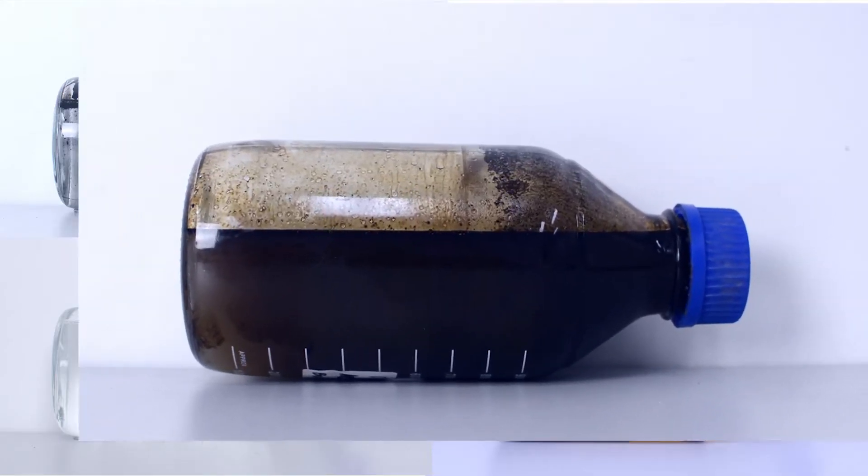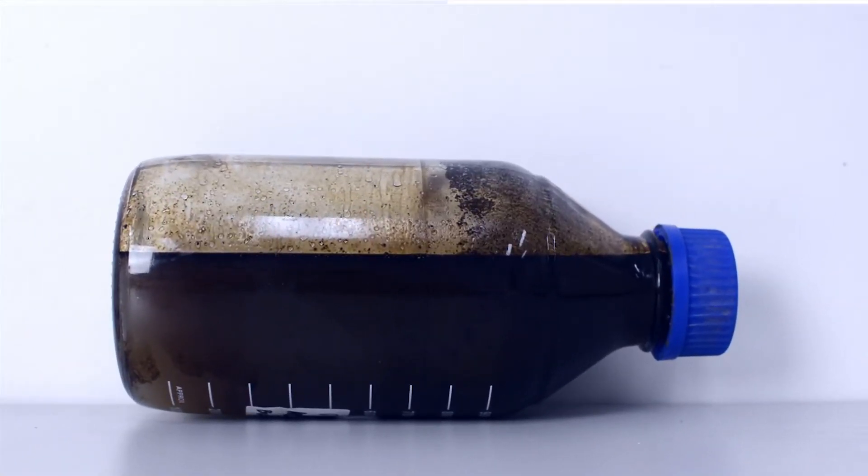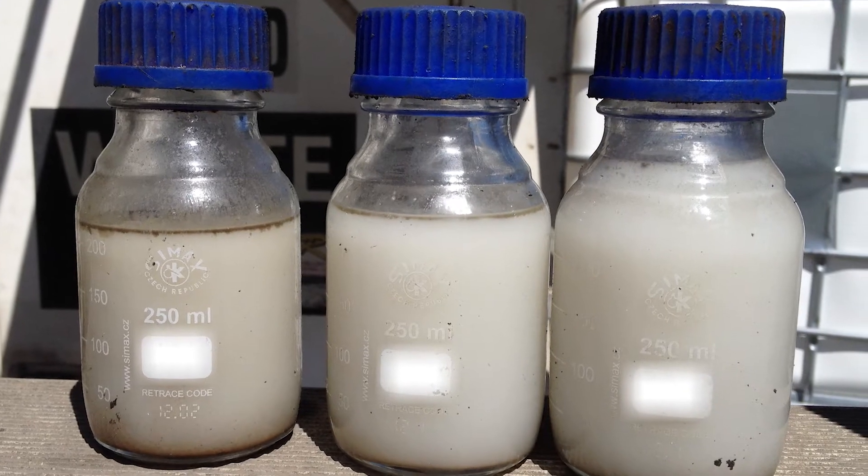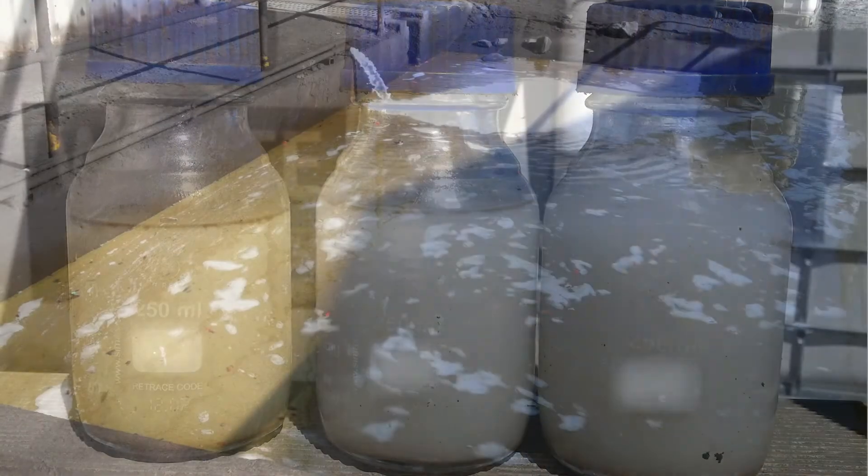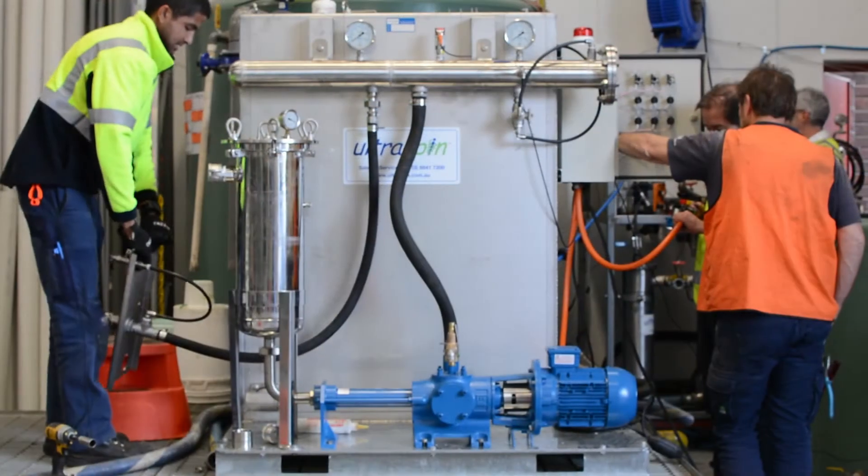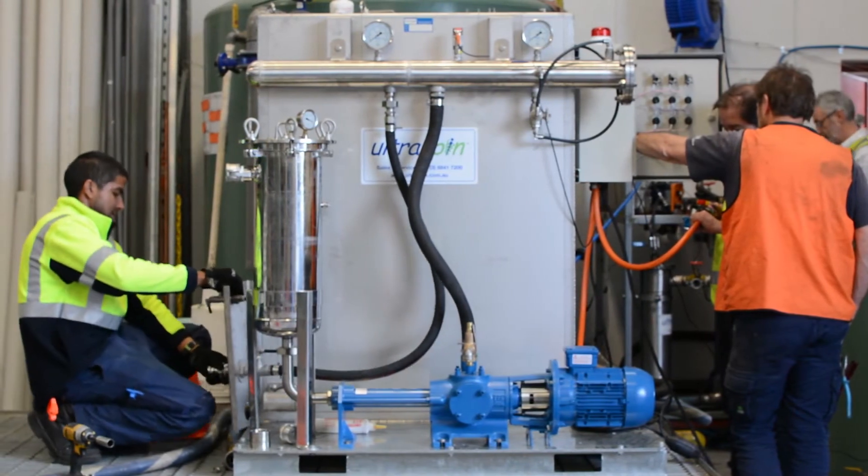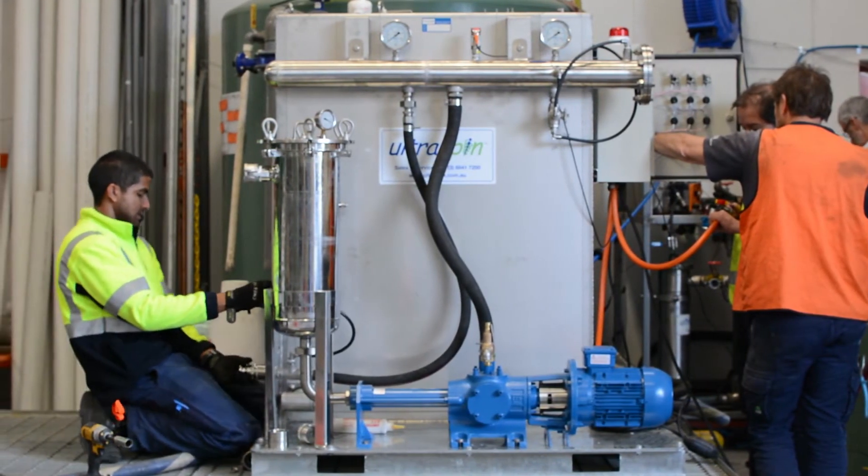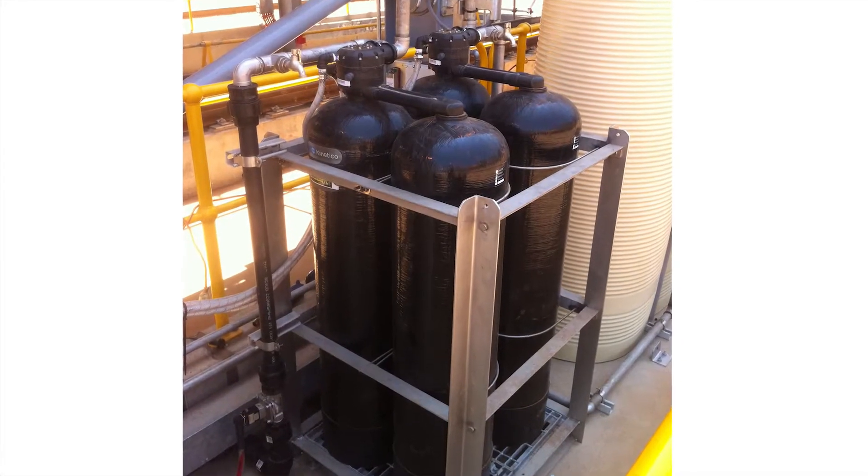Next we have emulsified oil. Emulsified oil can make the oily water look very cloudy because the oil is so intimately mixed with the water. Emulsified oil includes oil droplet sizes from 2 to 150 micron, and because the droplet size is so small, it requires a much more powerful separator and gravity-based systems are going to do very little.